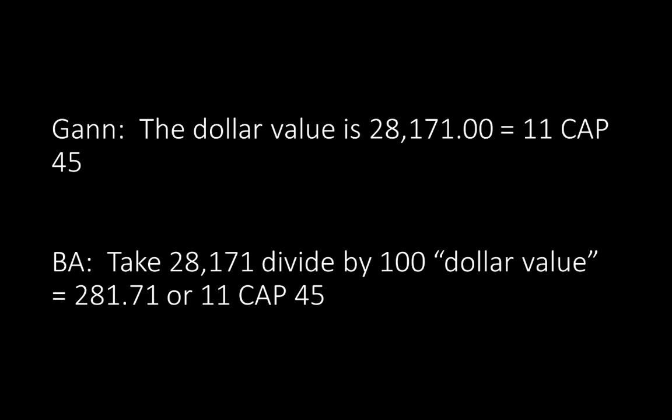GAN: the dollar value is $28,171, which equals 11 Capricorn 45. The way we get that is take $28,171 and divide by 100, which is the quote-unquote dollar value, which equals $281.71 or approximately 11 Capricorn 45. So that word 'dollar value' there is kind of a sneaky word, but all he means is just move the decimal over.